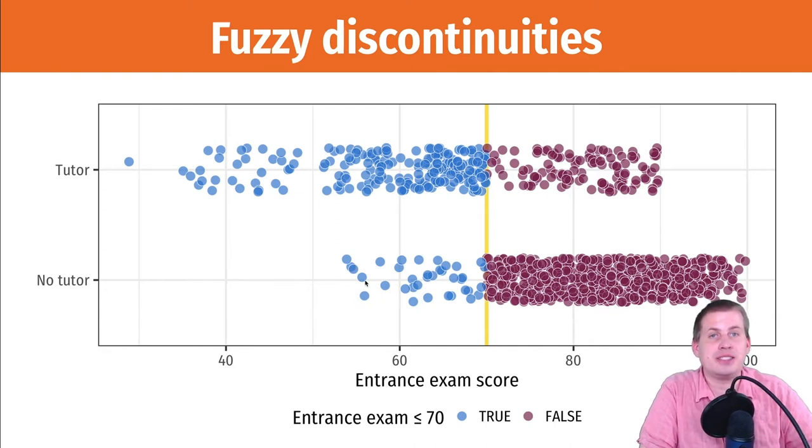Either because they fell through bureaucratic cracks, or because they're a never-taker, and even though they were assigned to do it, they're not going to do it, or maybe they're a defier even though we pretend they don't exist. And so these people here are kind of messing up whatever jump we have at the discontinuity because there's non-compliance.